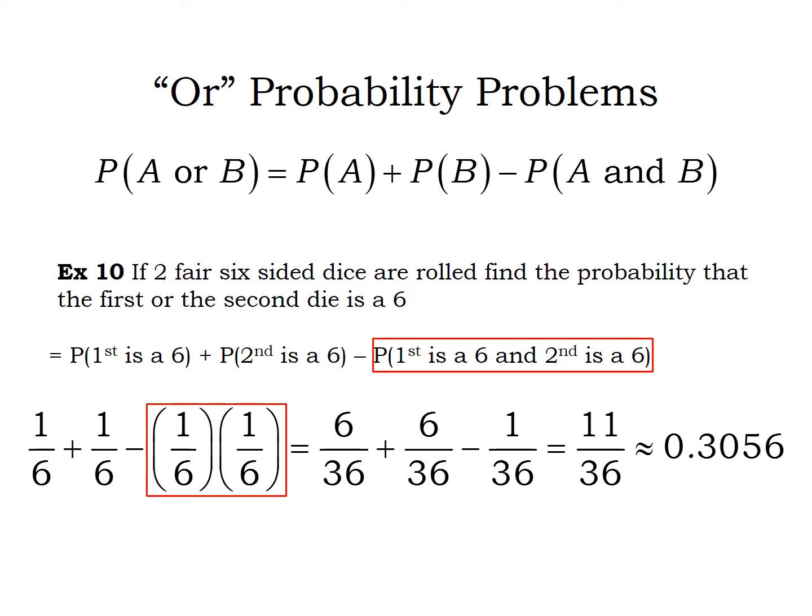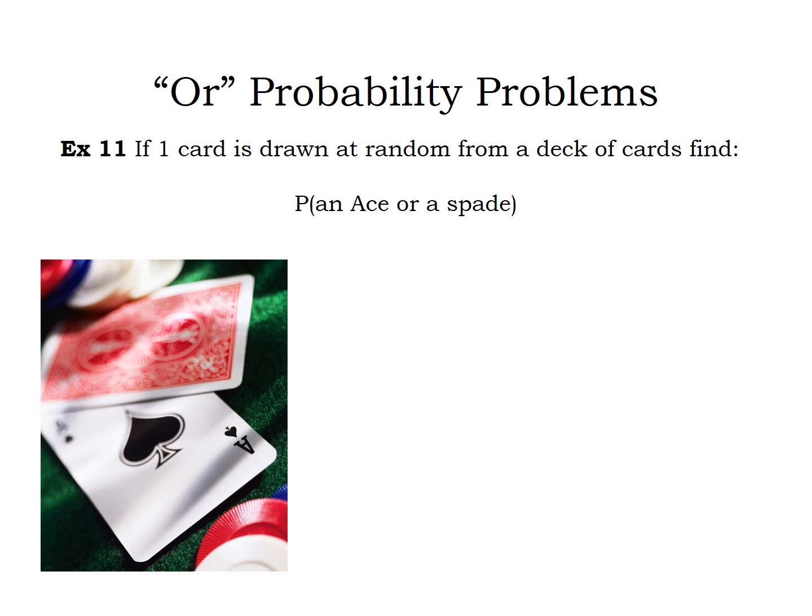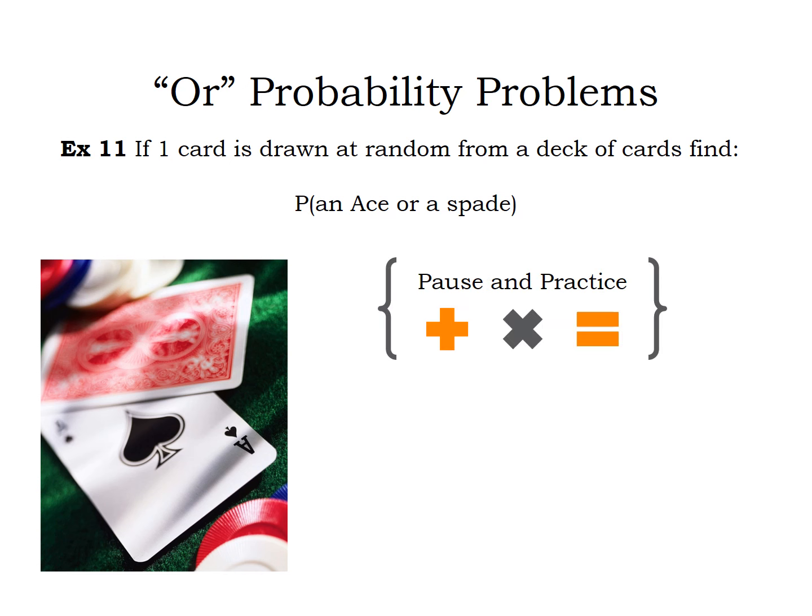One more time. We're going to draw one card from a deck of cards, and I want the probability that the result is either an ace or a spade — or both. Pause and practice: write it out in words and notation, write out the probabilities, and simplify.